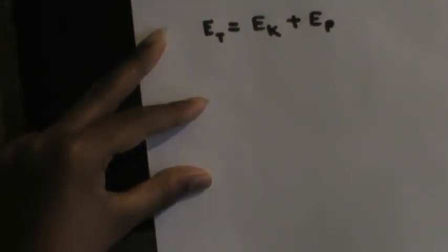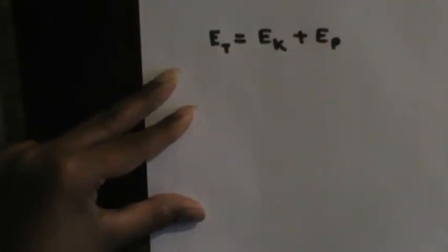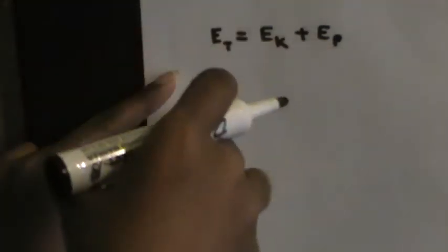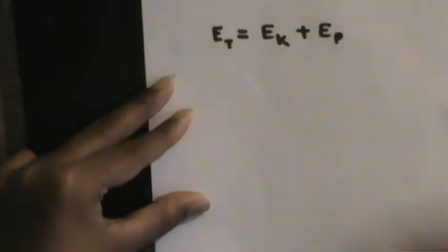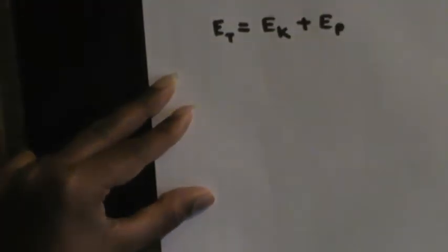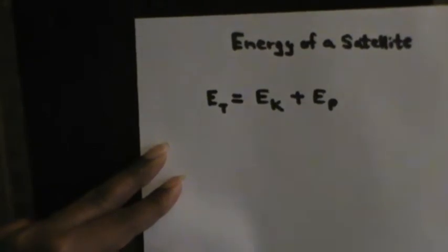We know the values of these two quantities. We can substitute them to find the value of Et. We can solve and simplify this so that it will be easy for any problem we face under gravity involving the energy of a satellite — or not even just a satellite, but the energy of any object.